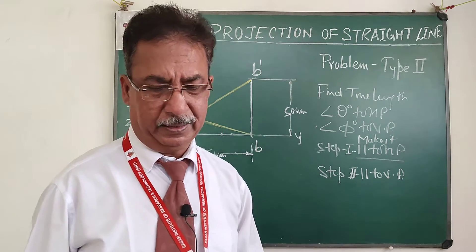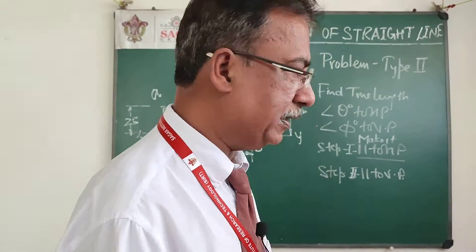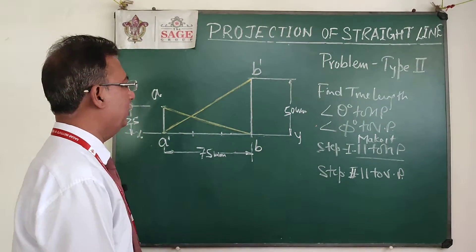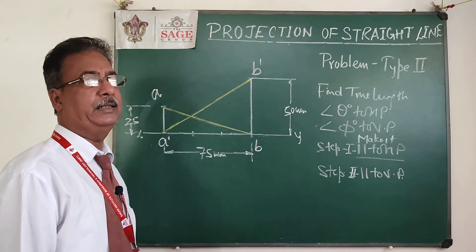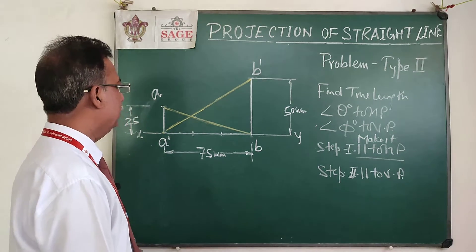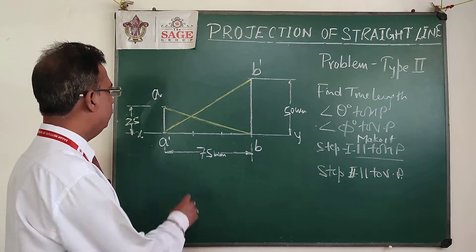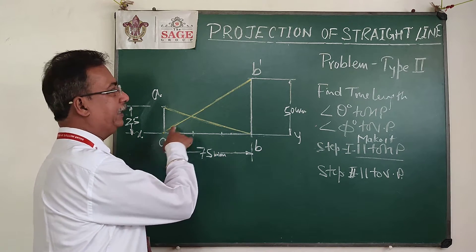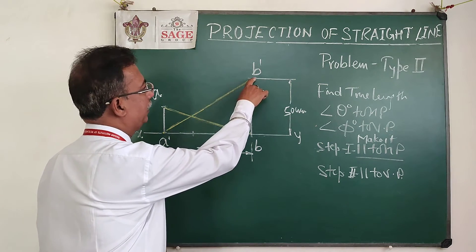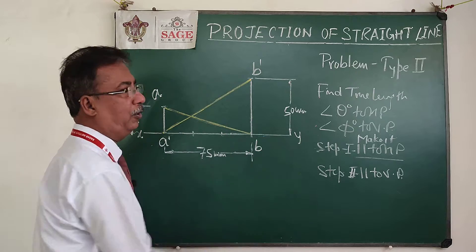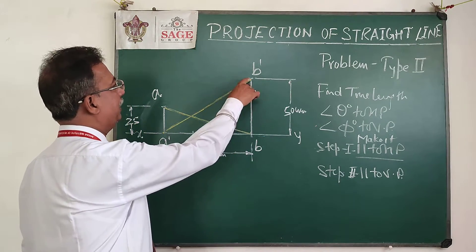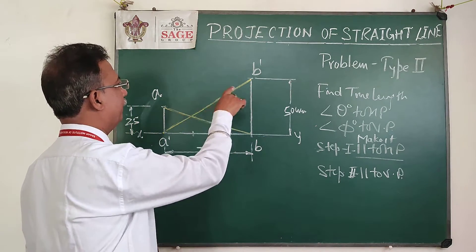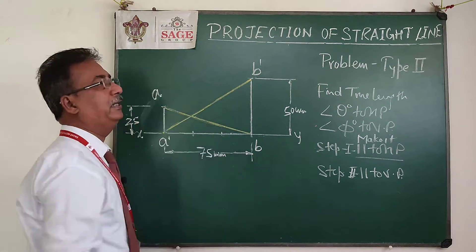When the line is parallel to VP we get theta in the front view. So I am going to make this line once parallel to HP and another time parallel to VP. For making it parallel to HP, I can either hold end A dash and bring B dash down, or keep B dash fixed and rotate A dash upside.